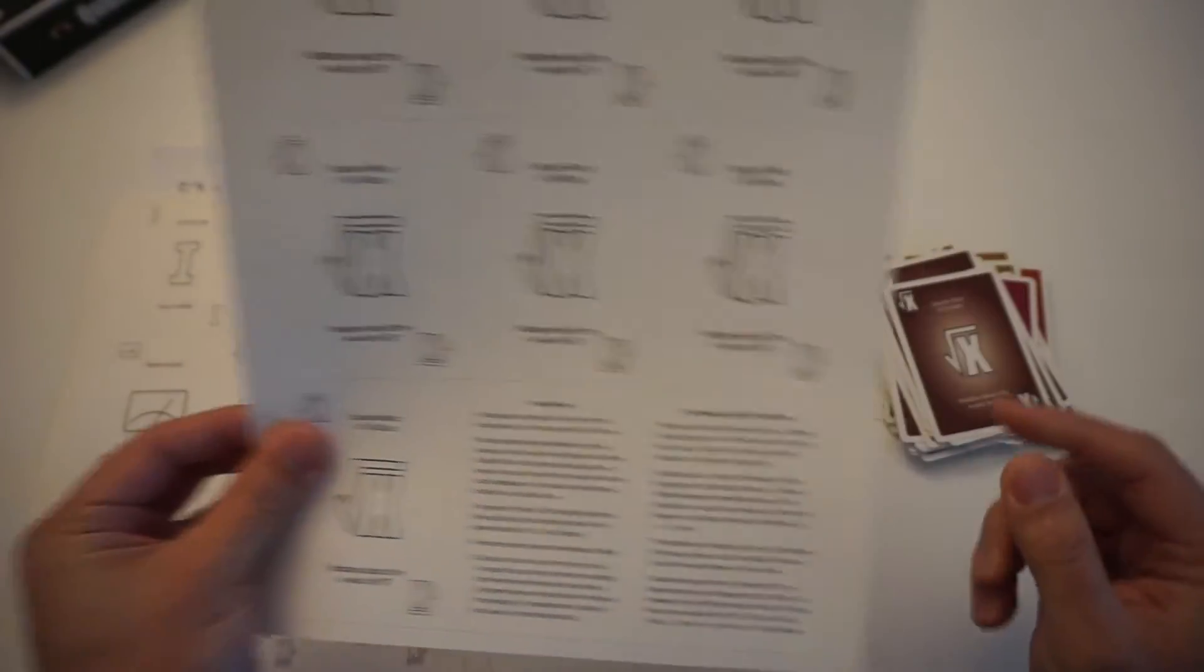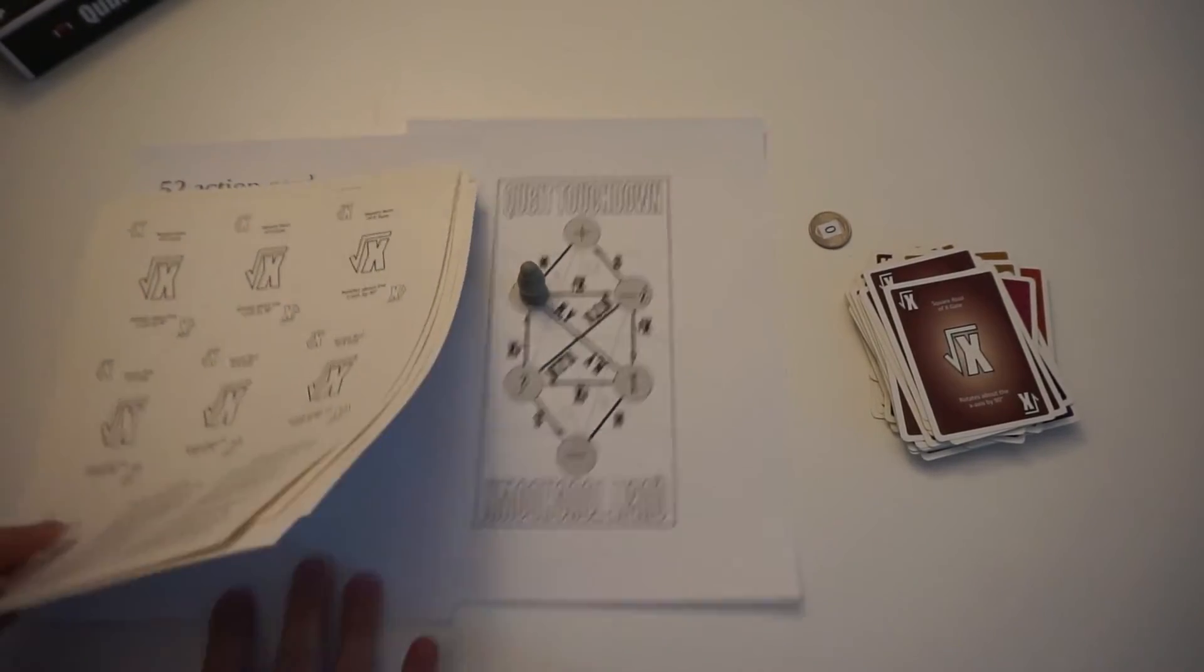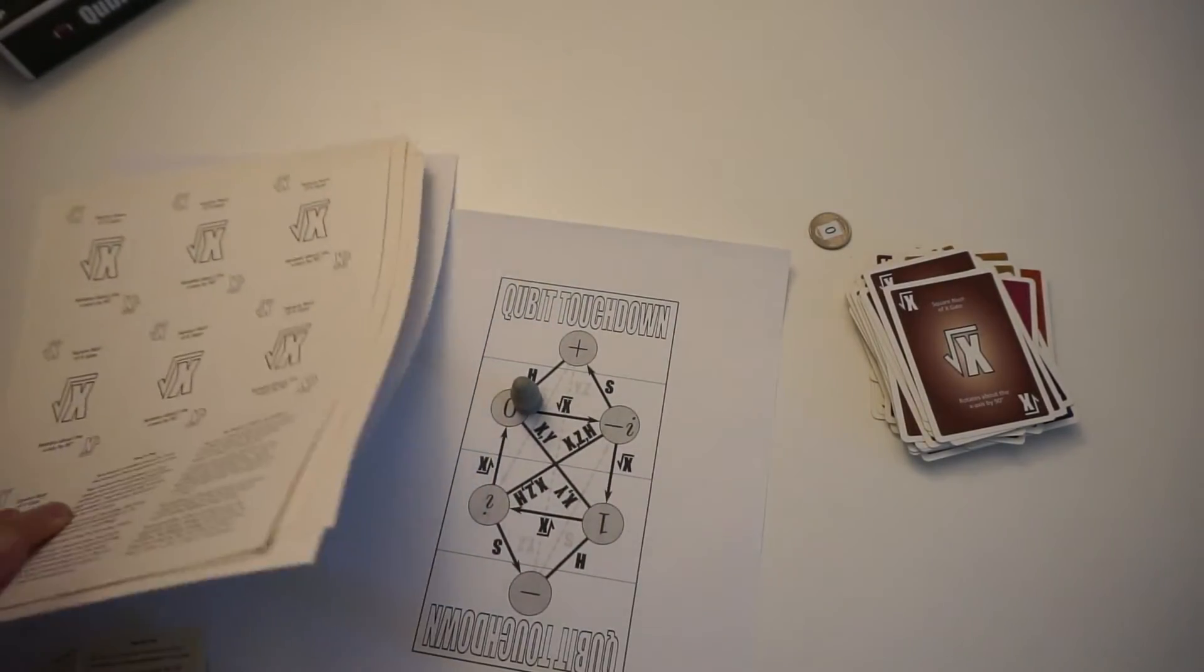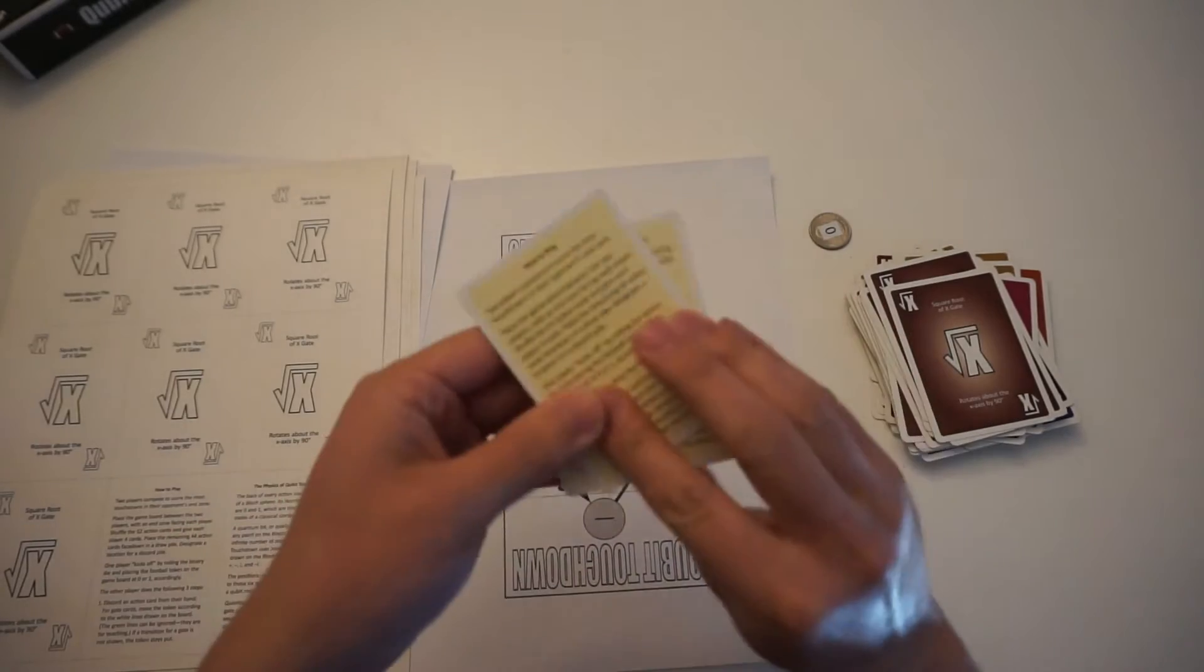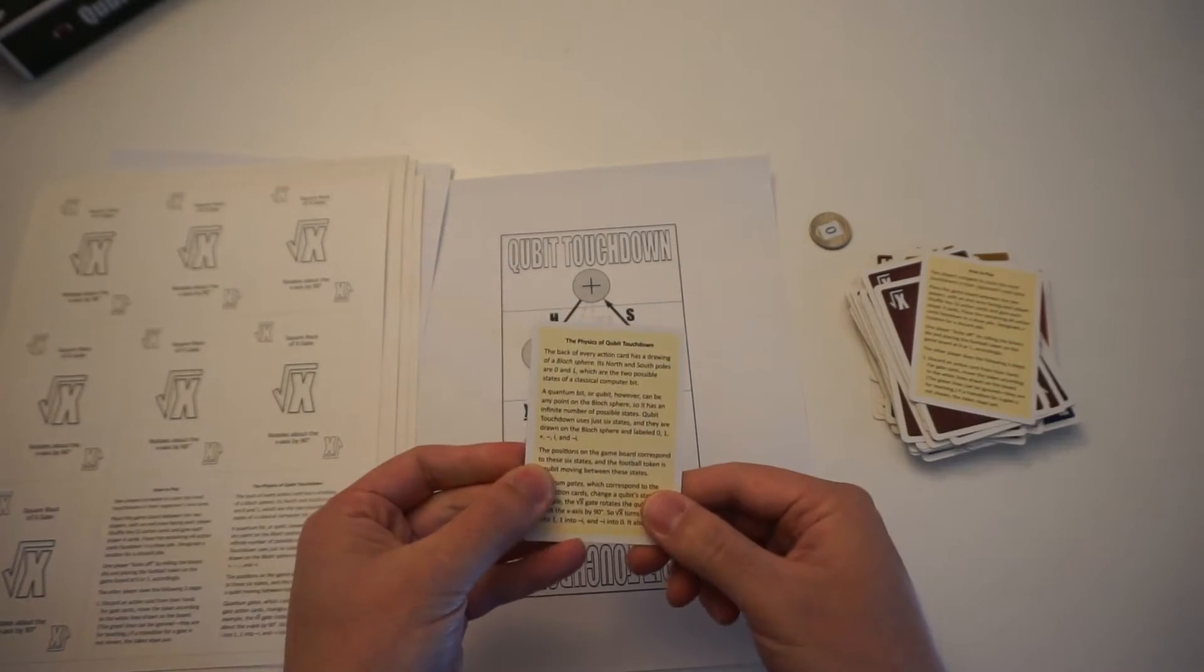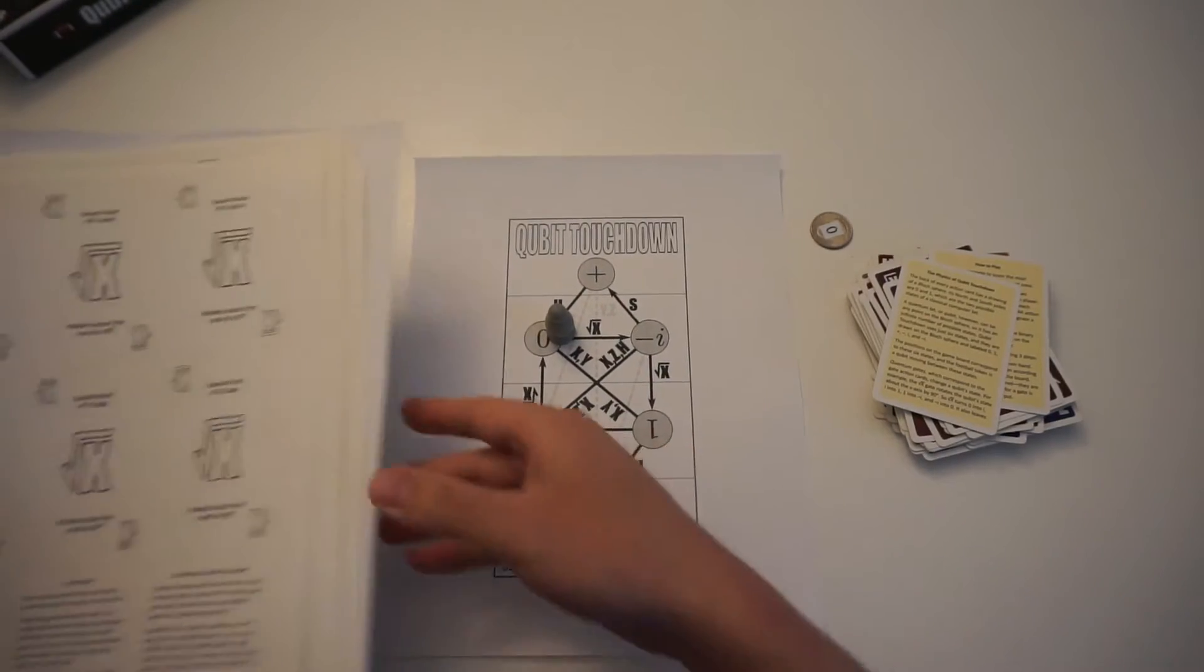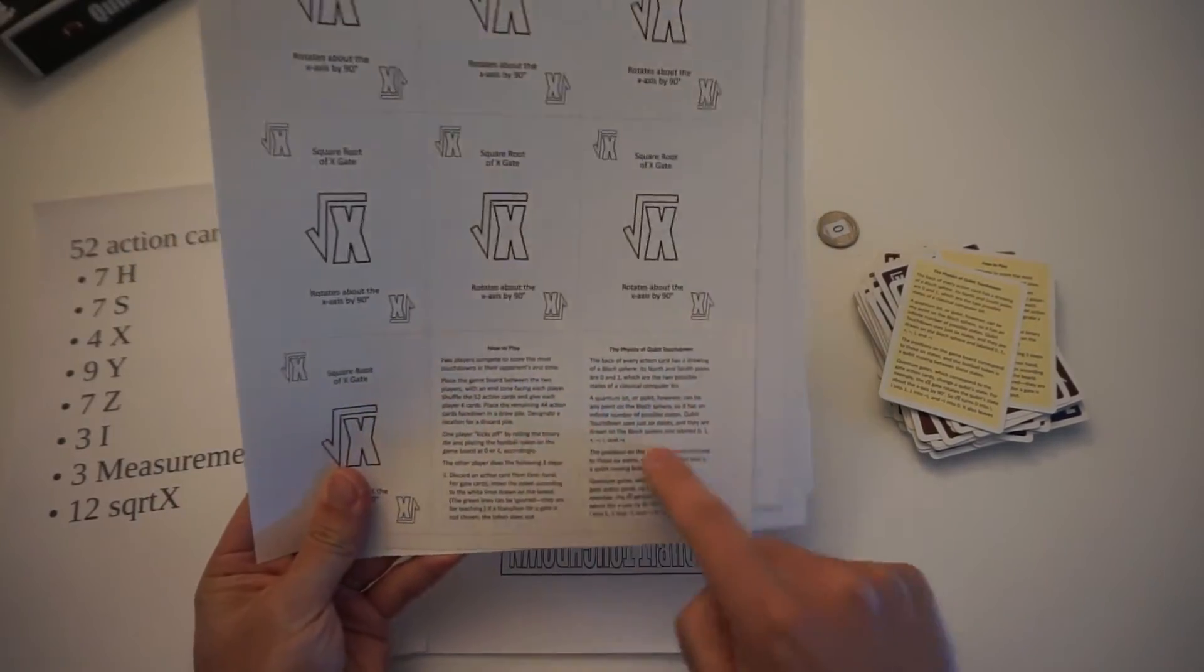So besides these 52 action cards, there are two more cards which are the instruction card and a card describing the physics of the game. So these two also come with the game. This one is how to play and has the rules. And this one explains some of the physics behind Qubit Touchdown. And so in this PDF with all the cards, it also has those two cards there.